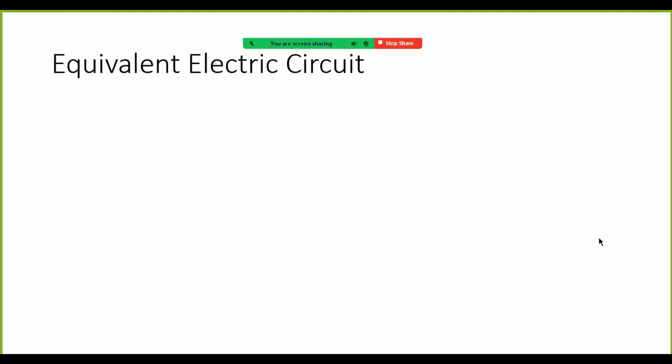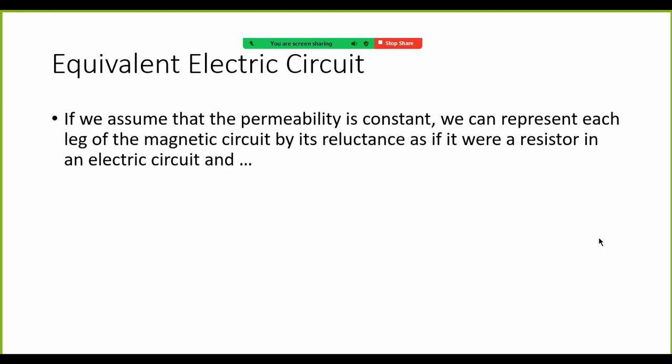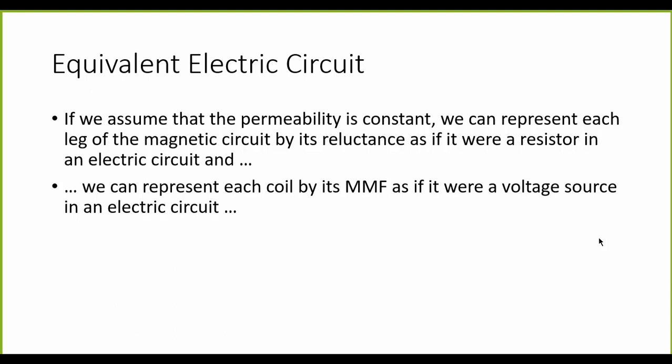The equivalent electric circuit is a way of solving magnetic circuits that works if we assume that the magnetic permeability of the iron is constant. We can represent each one of the legs or segments of the magnetic circuit by its reluctance, as if it were a resistor in an electric circuit. And in that case, we represent each coil by its MMF as if that coil were a voltage source.